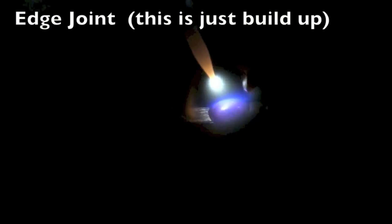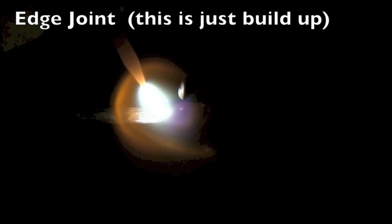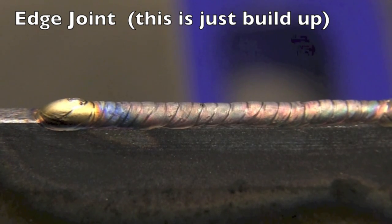And an edge joint. Now what I'm showing you here is just a buildup on a piece of metal. This is 1 1/8 inch thick metal, but it could just as easily be two pieces of 16 gauge sandwiched together with a flange type operation for duct work or something like that.